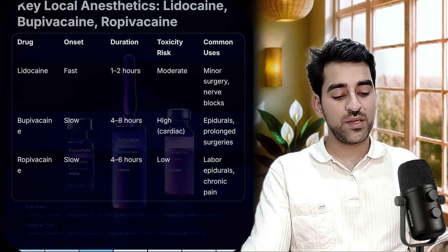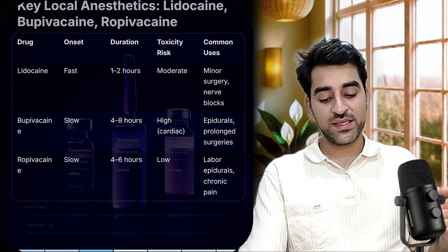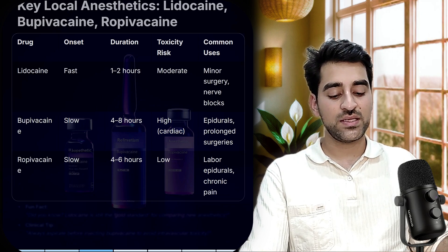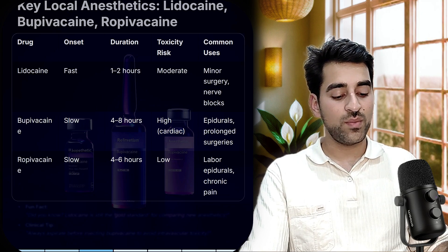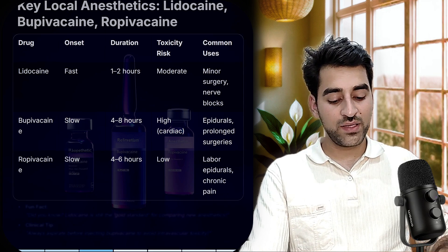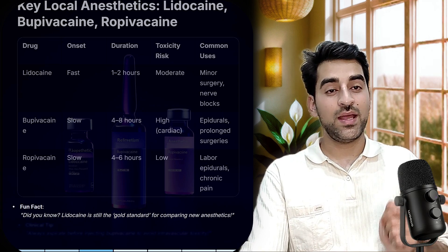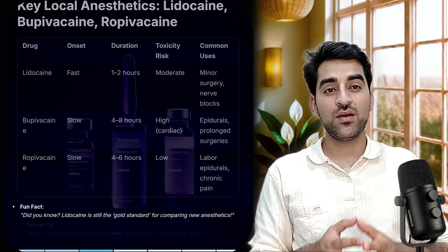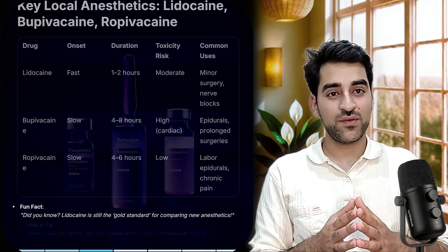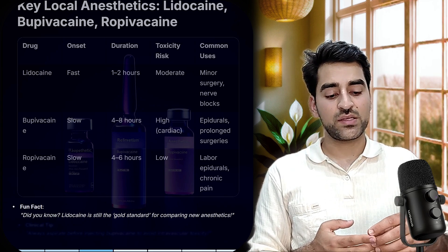Ropivacaine has a slower onset, a duration of four to six hours, and low toxicity. It is commonly used in labor epidurals and chronic pain management. A fun fact: even today we use lidocaine as the gold standard for comparing new anesthetics in terms of duration and toxicity.